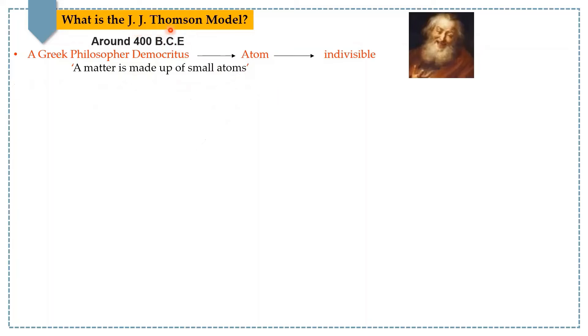In this lecture, we will discuss J.J. Thomson's atomic model. Around 400 BCE, a Greek philosopher Democritus proposed his concepts about the atom. According to him, everything is made up of small atoms. Atom is a Greek word meaning indivisible.